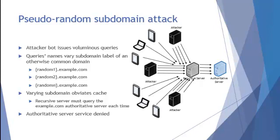So example.com in this case. But the subdomain is randomized, or pseudo-randomized. So here there's a query for random-one-string.example.com — that's one query — a second random-string.example.com, and so forth. All of these attackers are creating these randomized labels and providing the suffix of the domain being attacked, example.com.